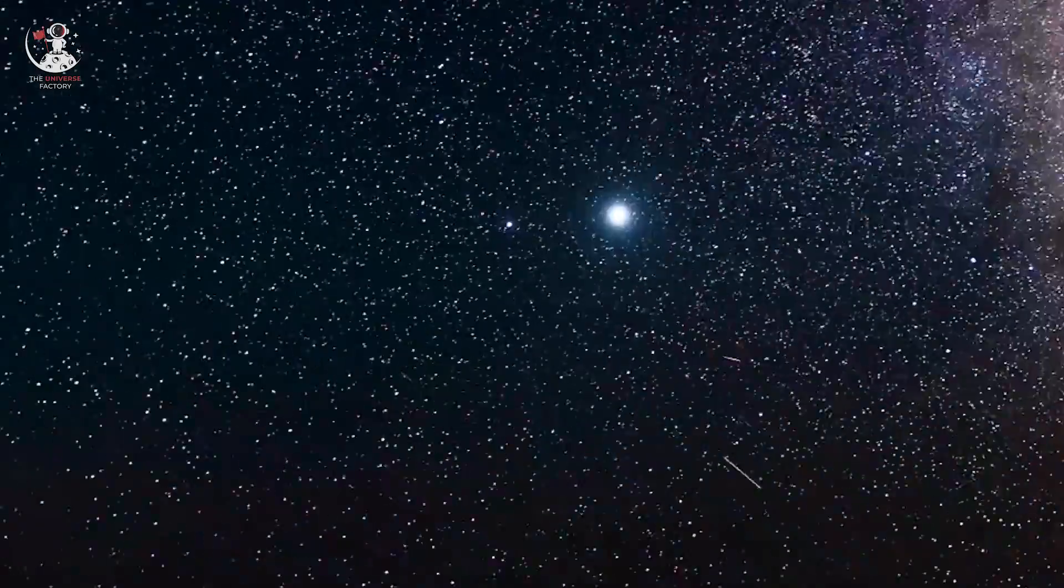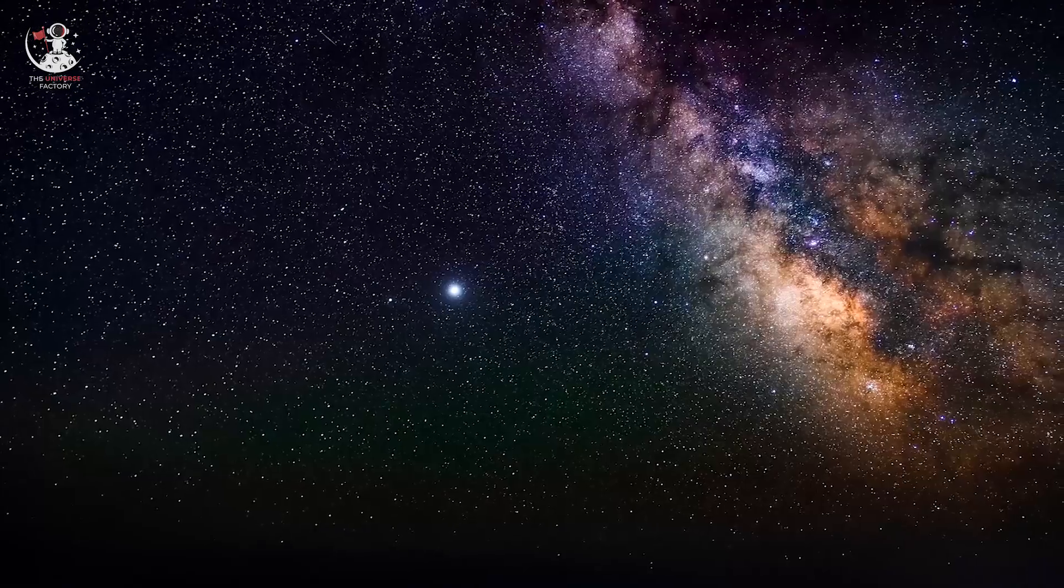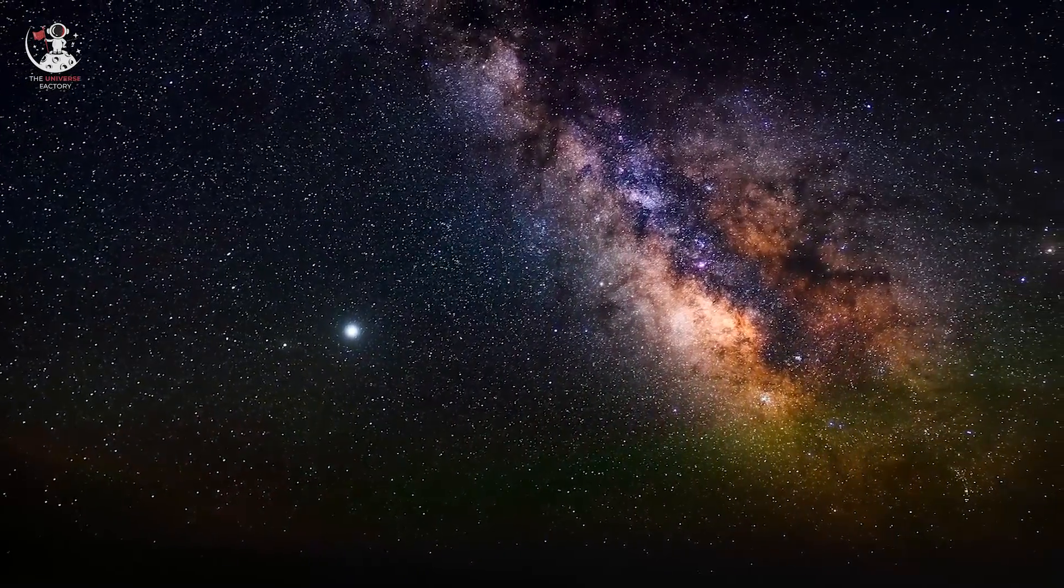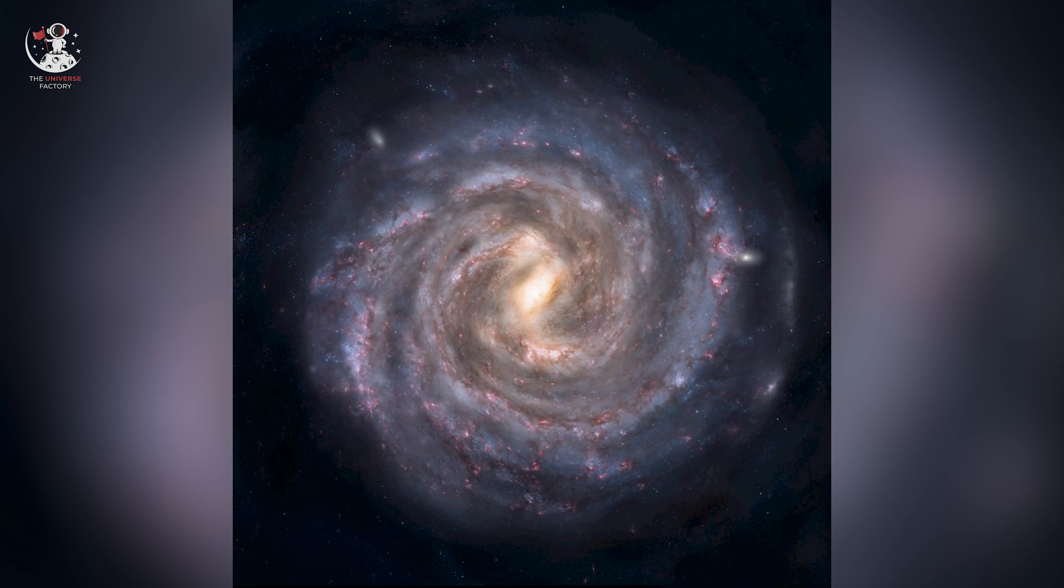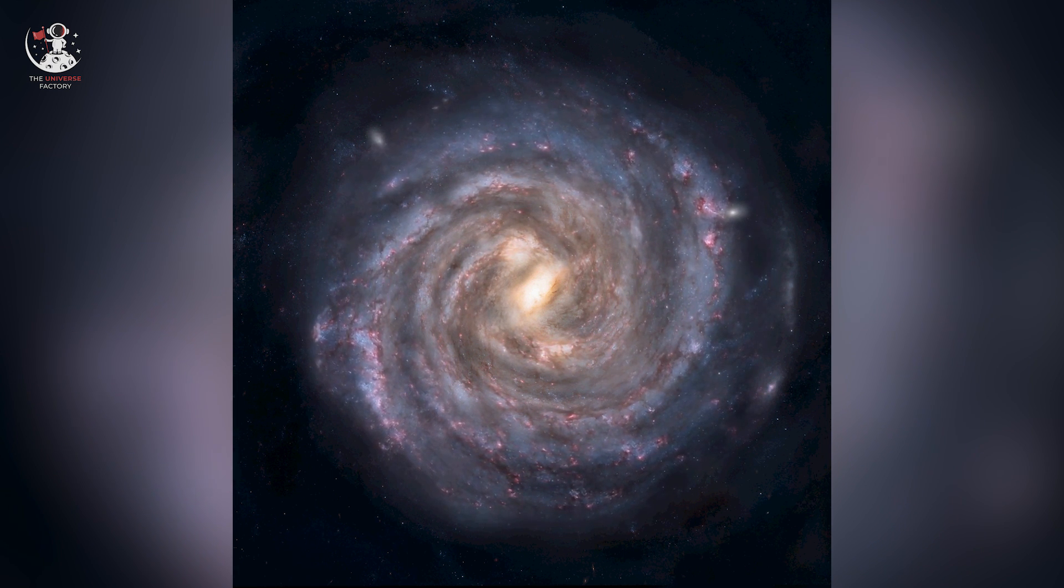Milky Way is a hazy band of light seen in the night sky formed from the stars that cannot be individually distinguished with the naked eyes. It is so giant that if you travel from its one end to another at the speed of light, it will take a hundred thousand years.